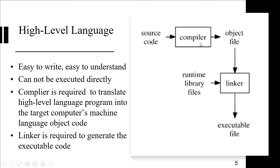The key point is that high-level language programs must be translated by the compiler and then linked to convert them into an executable file. Source code goes to the compiler, which translates it into an object file; it goes to the linker, which links the library files; and finally it is converted into an executable file. A typical example in Windows is word.exe or powerpoint.exe — these are the executable files generated by the linker after linking the libraries.